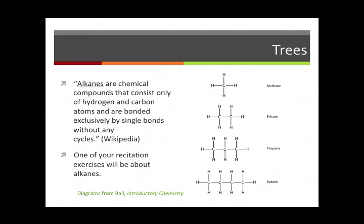Now, remember that the C, the carbon, and the hydrogen must always have specified degrees, or as the chemistry people say, valences. A carbon must always have degree four and a hydrogen must always have degree one. So if you're trying to draw one of these molecular diagrams for an alkane, you're very constrained in what you can do.